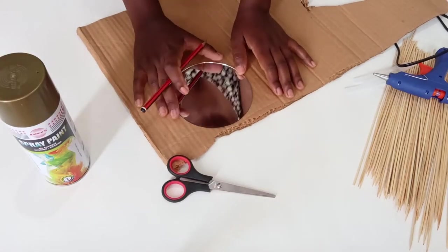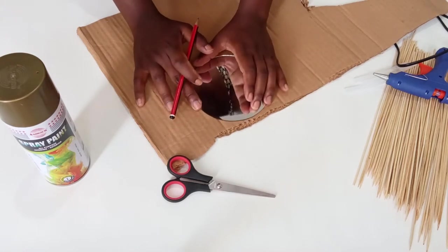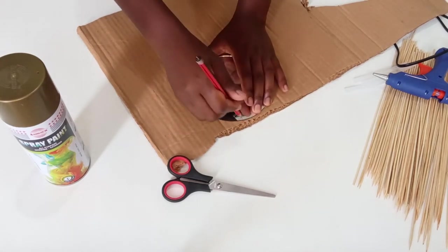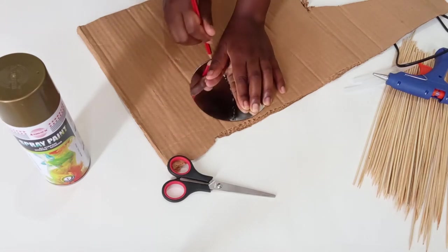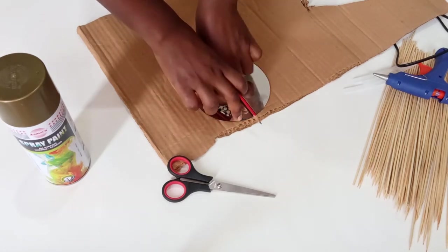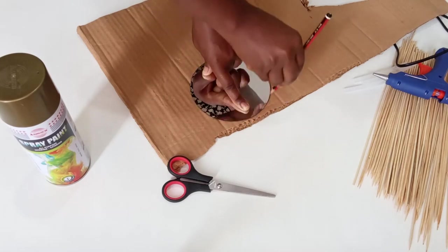So first things first, we're just going to draw an outline of the mirror from the cardboard. Since I don't have much tools, I'm just going to do a shortcut and draw that mirror outline.